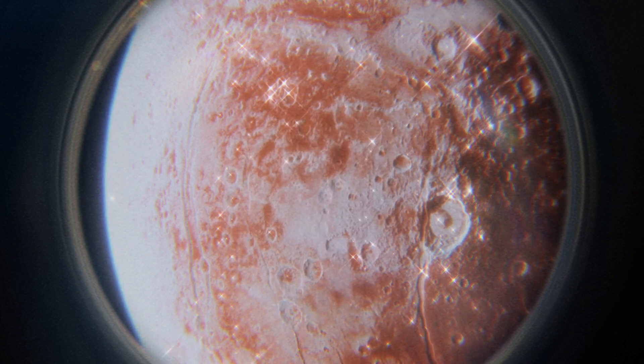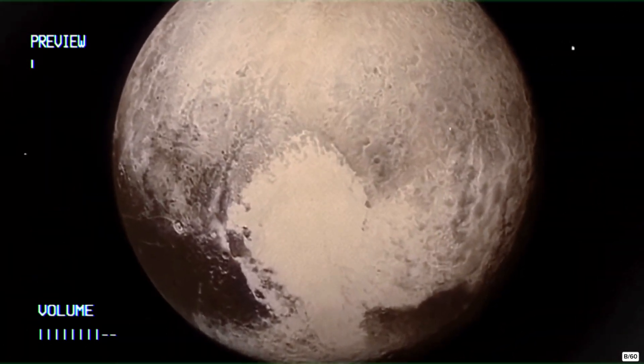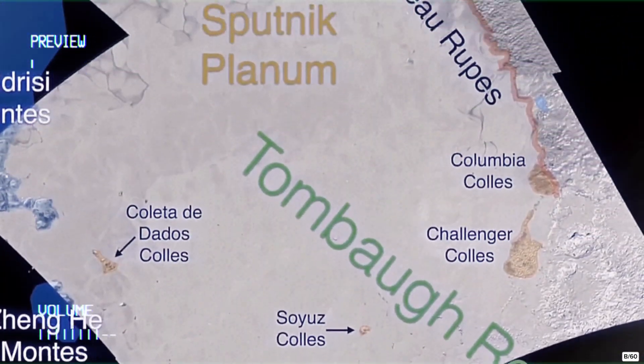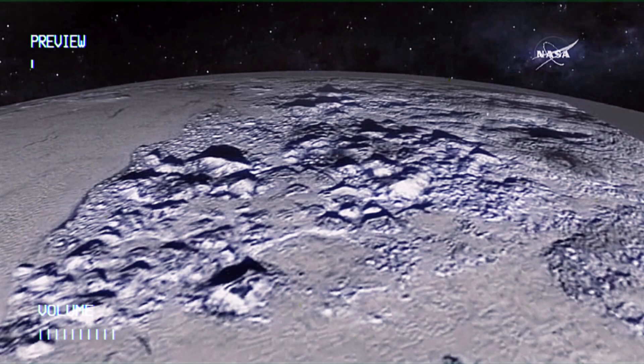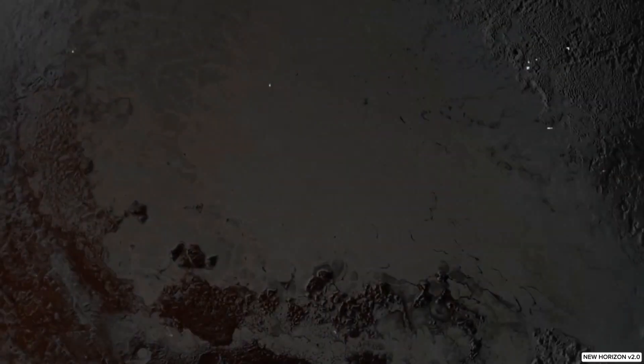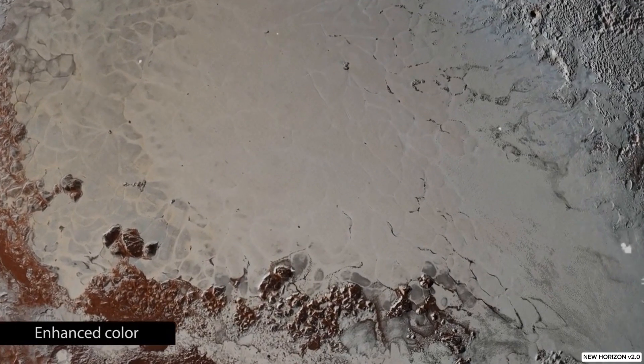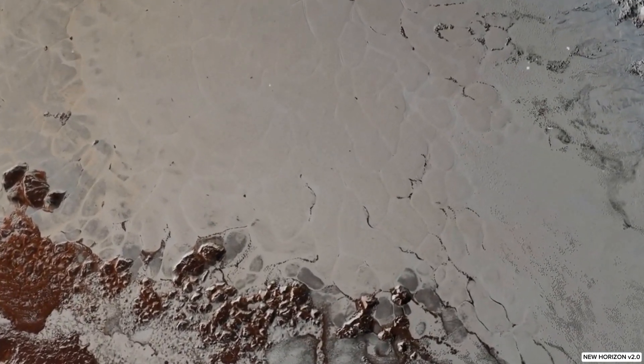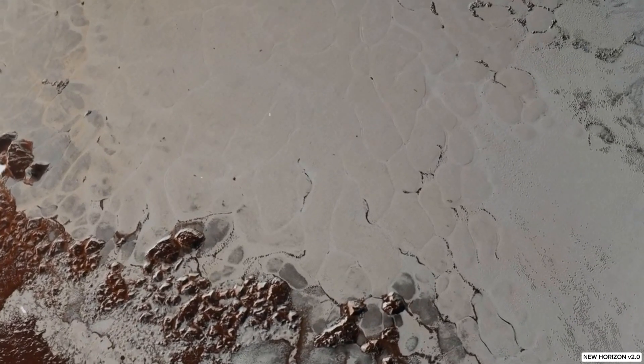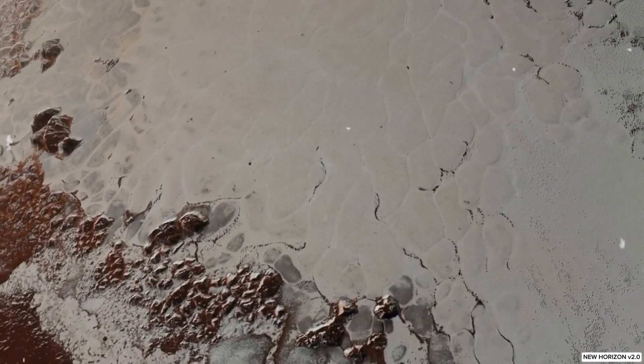In the far reaches of Tombaugh Regio's eastern expanse, a distinct narrative unfolds on Pluto's canvas. This sector seems to echo a bygone era, with its land adorned in a darker hue, concealing the ancient mysteries of epochs long past. The terrain, pockmarked by numerous craters, serves as an archaeological tableau, recounting tales from the annals of time. A stark departure from the youthful vibrancy of Sputnik Planum, this realm is a frozen history lesson, a testament to Pluto's transformative journey through the ages, akin to the ever-evolving landscapes of our own Earth.